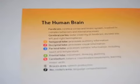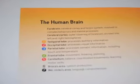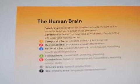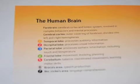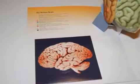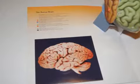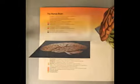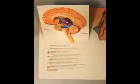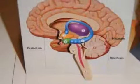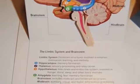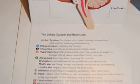Numbered labels allow students to quiz themselves on the cerebral cortex structures and functions. A second pop-out model focuses closely on the limbic system and the brainstem, again with numbered labels to help students test their knowledge of structure and function.